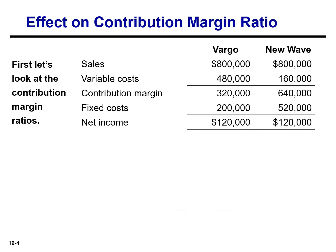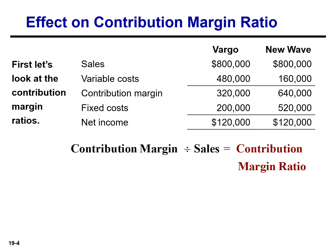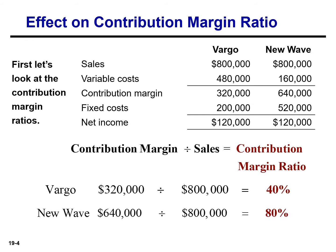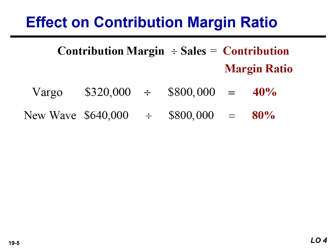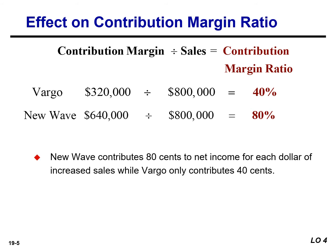Let's first look at the contribution margin ratio. Vargo has a contribution margin ratio of 40%, whereas New Wave is 80%. Because of its lower variable cost, New Wave has a contribution margin ratio of 80% versus only 40% for Vargo Video. That means that with every dollar of sales, New Wave generates 80 cents of margin and thus an 80% increase in net income, whereas only 40 cents for Vargo.